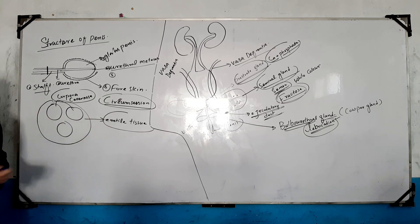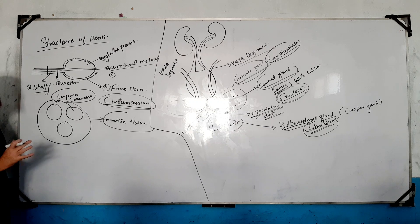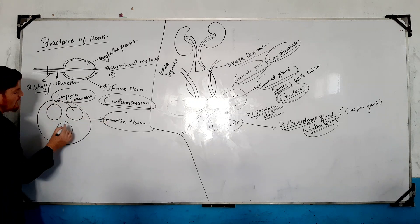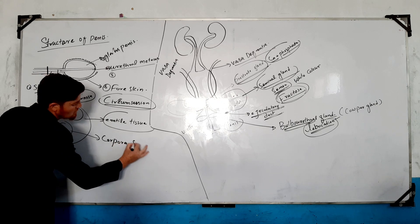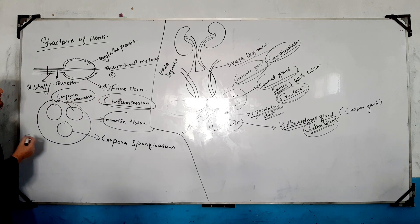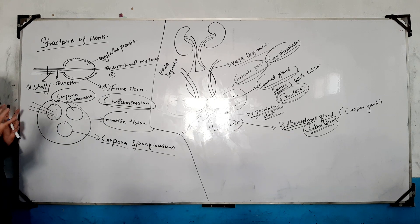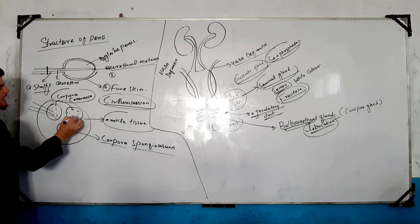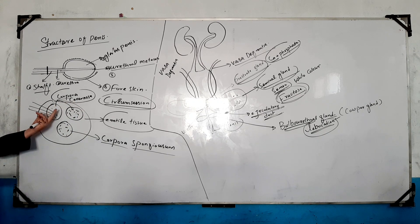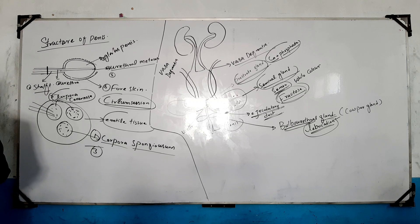This is called corpus cavernosum. The corpus is spongy tissue. The blood supply goes through this spongy tissue in the urethra.